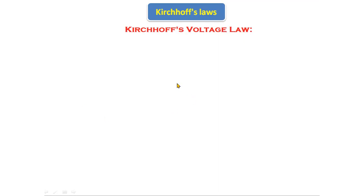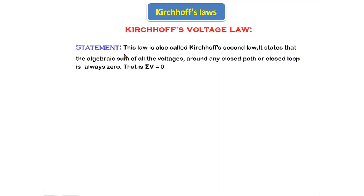If you see the statement, this law is also called Kirchhoff's second law. It states that the algebraic sum of all the voltages around any closed path or any closed loop is always equal to zero. If we take any loop, sum of all the voltages should be equal to zero — then only it is called a valid circuit. For every circuit, KVL and KCL should be satisfied.